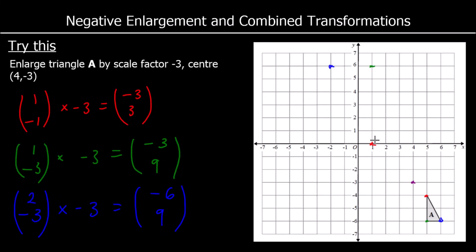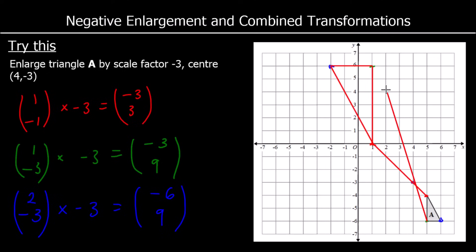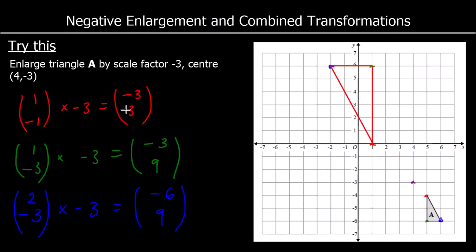And I'm going to join up my 3 corners — this will be my new triangle. Again I can check my answer: the red point and the red point joined together will go through the centre of enlargement, the green points will go through the centre, and the blue points will go through the centre. So I know I've done it correctly.